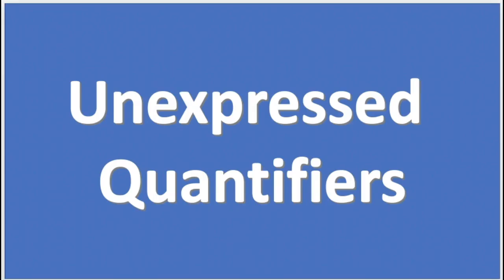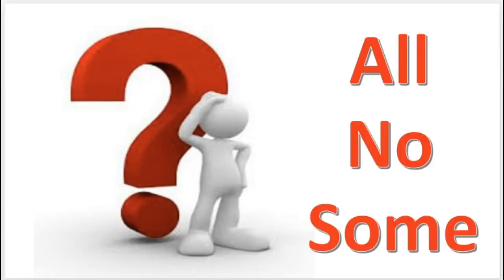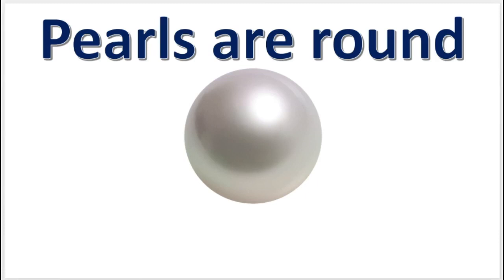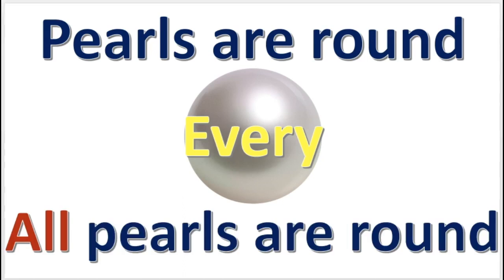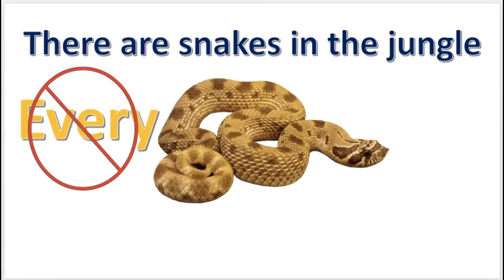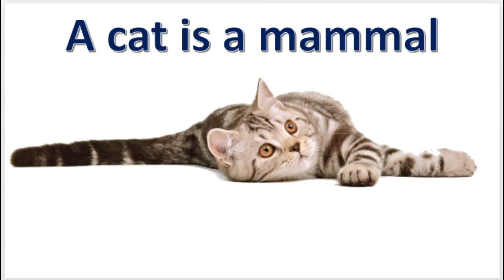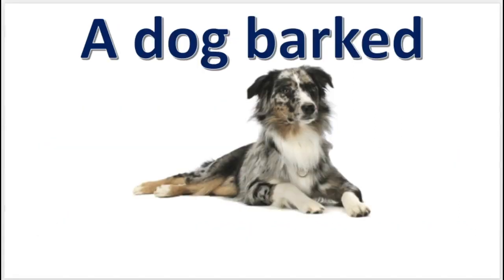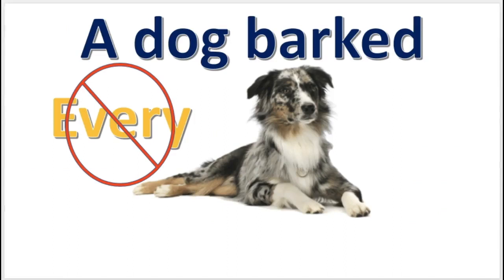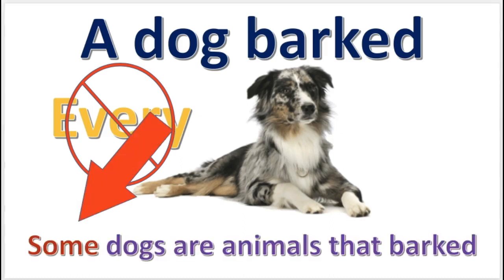The next topic is that of unexpressed quantifiers. The meaning of the statement will dictate which quantifier you should use. For example, 'pearls are round' means every pearl is round, so the quantifier is 'all.' In another example, the meaning is not that every snake is in the jungle, but simply that at least one snake is in the jungle, so the quantifier is 'some.' Similarly, 'cats are mammals' means every cat is a mammal, so the quantifier is 'all.' And 'a dog has barked' means simply one dog has barked, so the quantifier is 'some.'